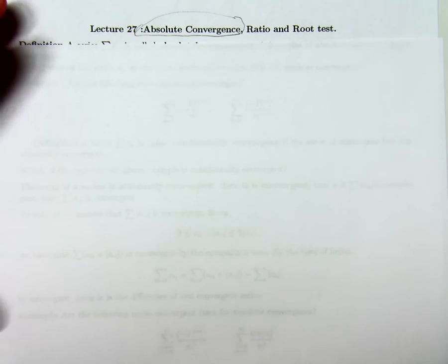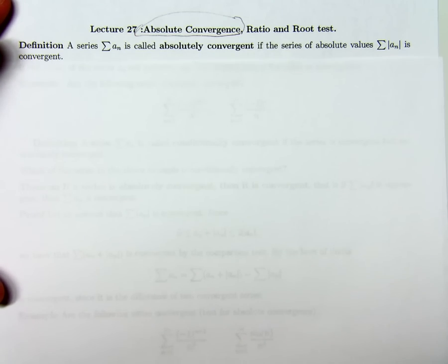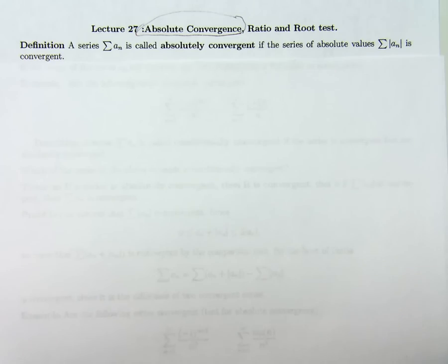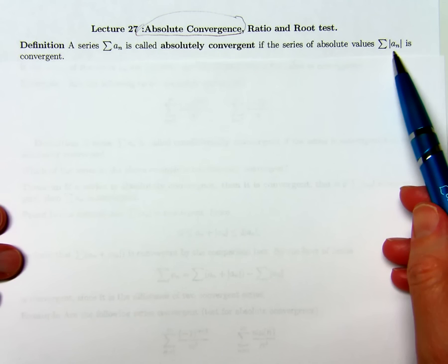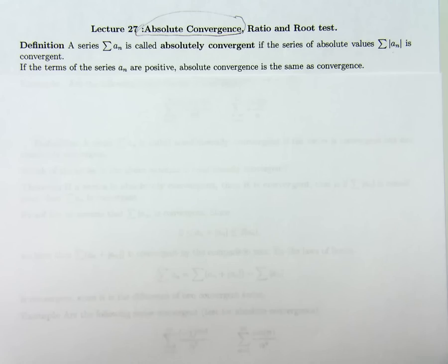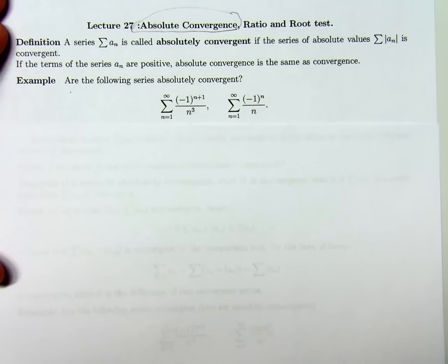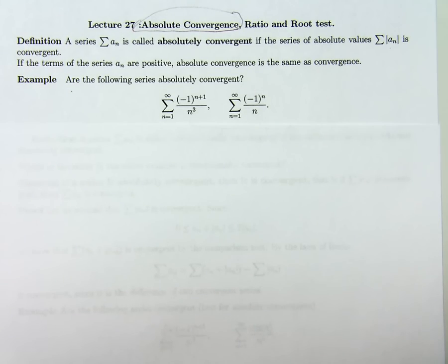We're going to talk about absolute convergence. First we'll start with the definition. If I have a series, the sum of a_n, I say it's absolutely convergent if the sum of the absolute values of the terms is a convergent series. If the terms a_n are positive, absolute convergence is exactly the same as our ordinary notion of convergence. However, if I have some negative terms, this is a more subtle concept than convergence.